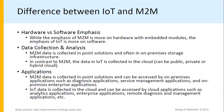Now we'll see hardware versus software emphasis. The emphasis of M2M is more on hardware with embedded modules, while the emphasis of IoT is more on software. This indicates that machine-to-machine communication gives more importance to hardware with embedded module features, whereas IoT is more dependent on software.